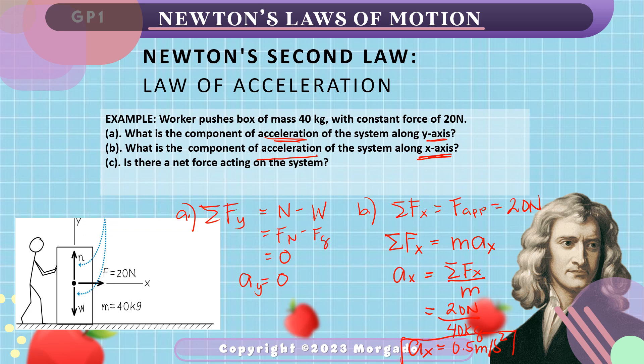Take note that objects may have acceleration in one axis and no acceleration in another. For the third question — is there a net force acting on the system? The answer is yes. Even if the vertical component has a net force of zero, there is still a horizontal component of force, which is 20 newtons, and this 20 newtons is also our net force.